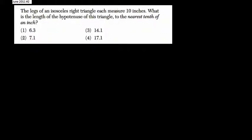We're told the legs of an isosceles right triangle each measure 10 inches. So an isosceles right triangle—that means the two legs are equal.